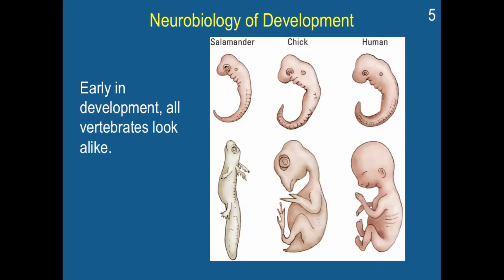Here is some basic neurobiology development information. Early in development, all vertebrates actually look alike — these are all early fetuses here. You can see the salamander, the chick, and the human all look relatively similar, but they're all going to grow into quite different species. This is actually some evidence for similar evolutionary origins, in that these very different species start to grow from some of the same origins.